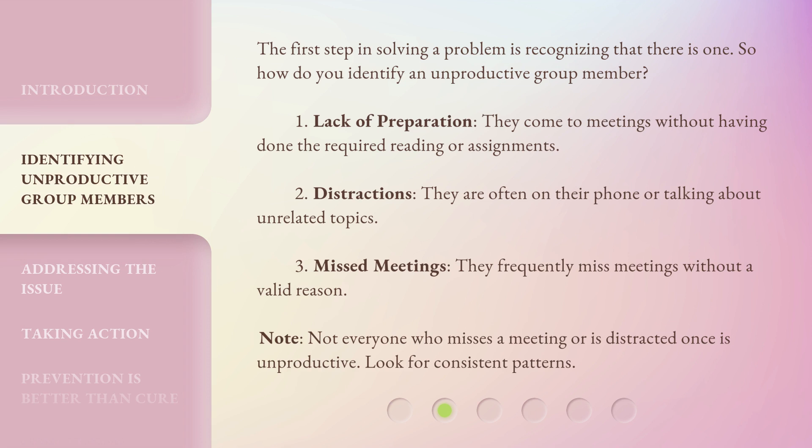The first step in solving a problem is recognizing that there is one. So how do you identify an unproductive group member? 1. Lack of preparation — they come to meetings without having done the required reading or assignments. 2. Distractions — they are often on their phone or talking about unrelated topics. 3. Missed meetings — they frequently miss meetings without a valid reason. Note: not everyone who misses a meeting or is distracted once is unproductive. Look for consistent patterns.